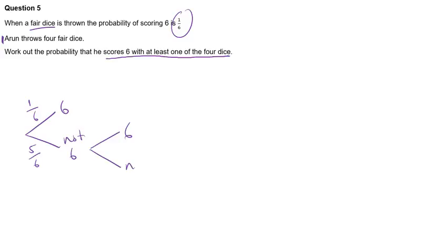Again, we can have a six or not a six, the same probabilities as before. Again, we're not interested what goes on here because already we've got at least one six, doesn't matter. So we could then have a six, not a six.